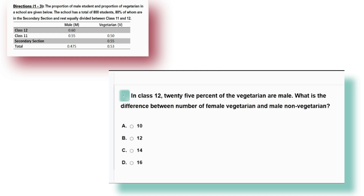Here is a quiz for you: in class 12, 25 percent of the vegetarians are male. What is the difference between the number of female vegetarians and male non-vegetarians? Options are 10, 12, 14, and 16. Please give the answer in the comment section. If you want more such problems, get the prime materials. Also, please join our Telegram channel t.me/ubcana and follow our Instagram instagram.com/techno.tv.